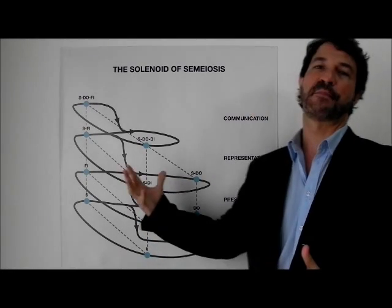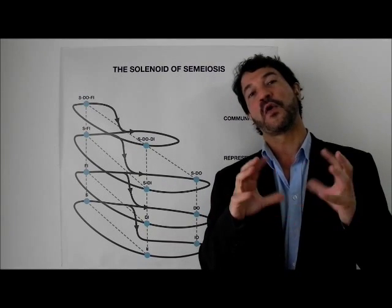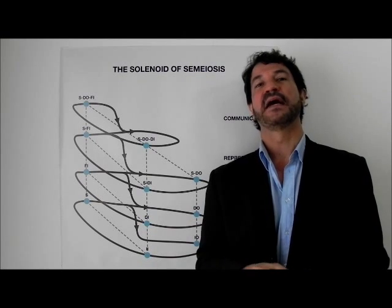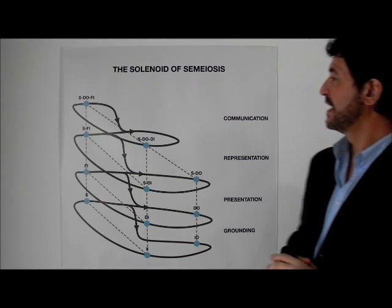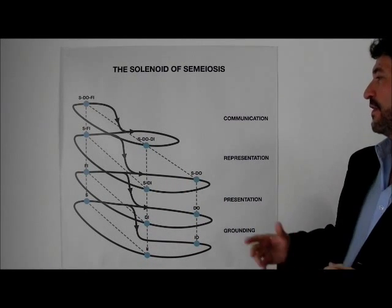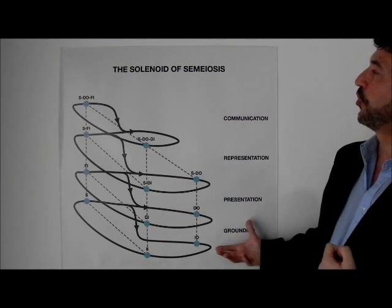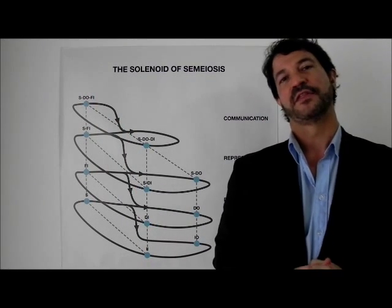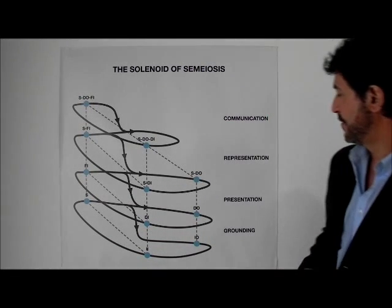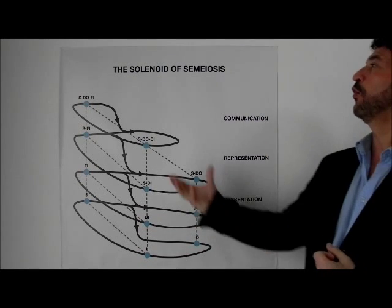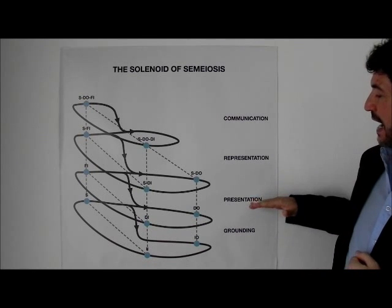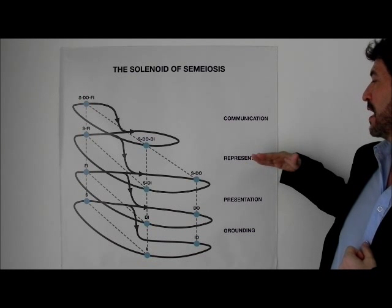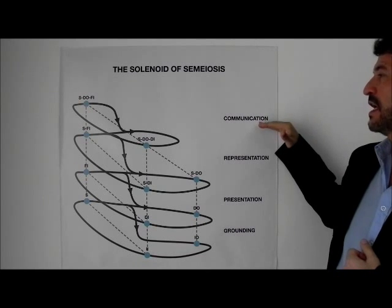The second property is that semiosis is autopoietic. That means that the system bootstraps itself and develops containing its own possibilities. It does not need a beginning or an ending, nor a creator, but it develops by itself. The third property is the dynamism of semiosis — there is a movement that determines the growth of semiosis from the less towards the more complex. The fourth property is that semiosis is periodic: there are four periods involved in the growth of semiosis, organized in a hierarchy so that presentation involves grounding, representation involves the two antecedents, and communication involves all others.